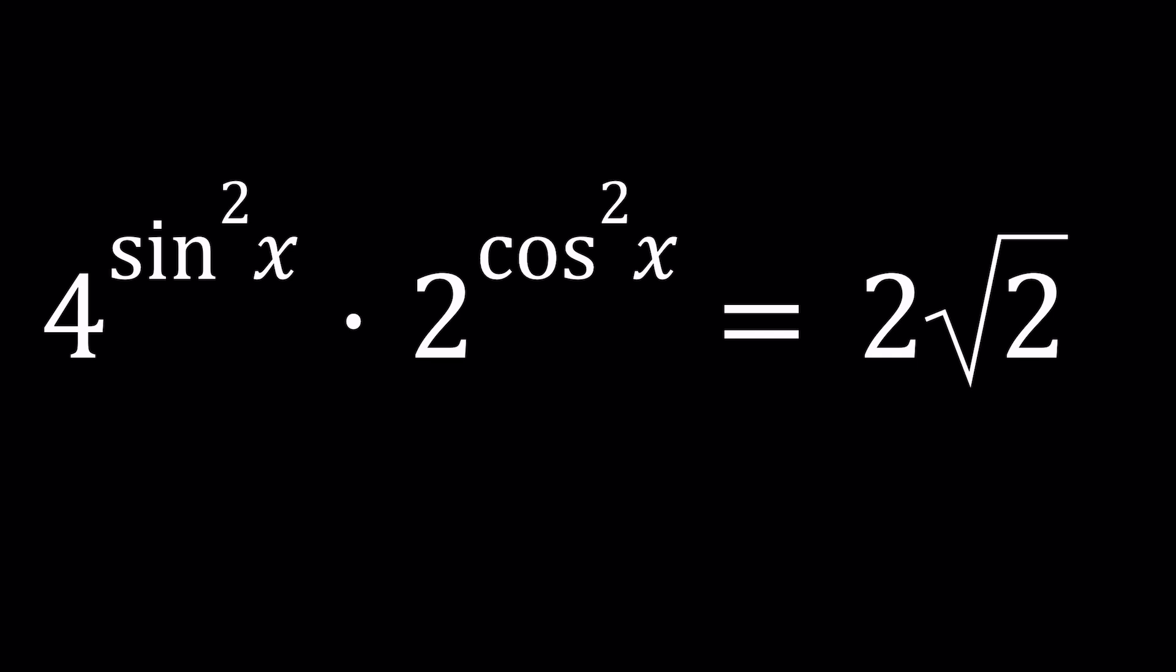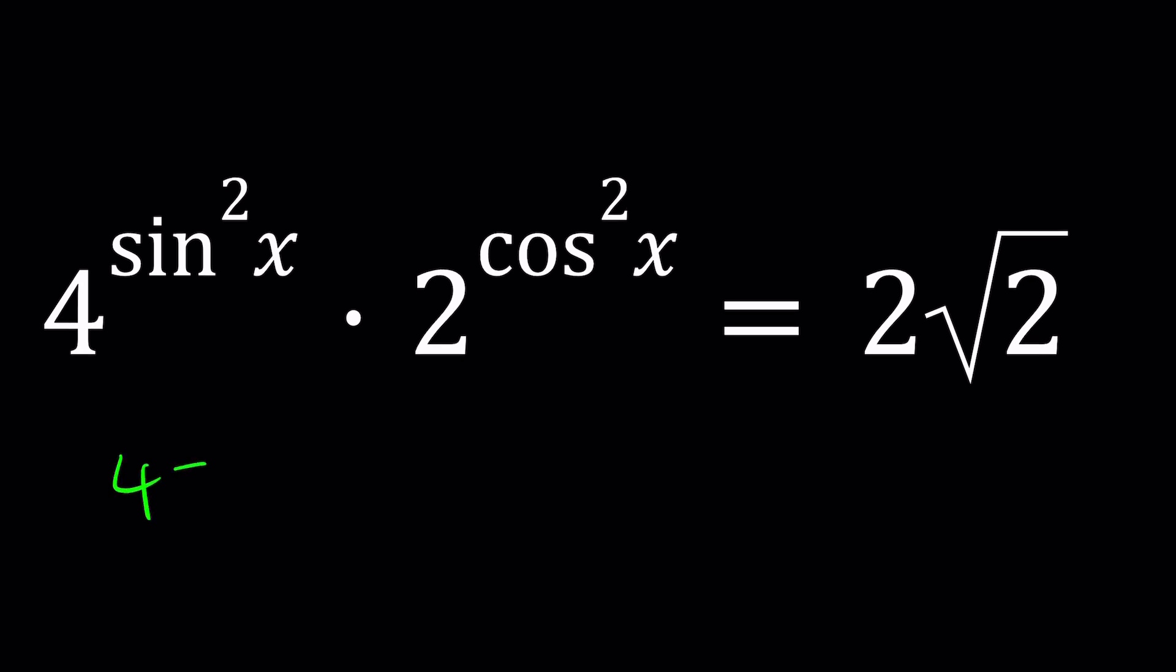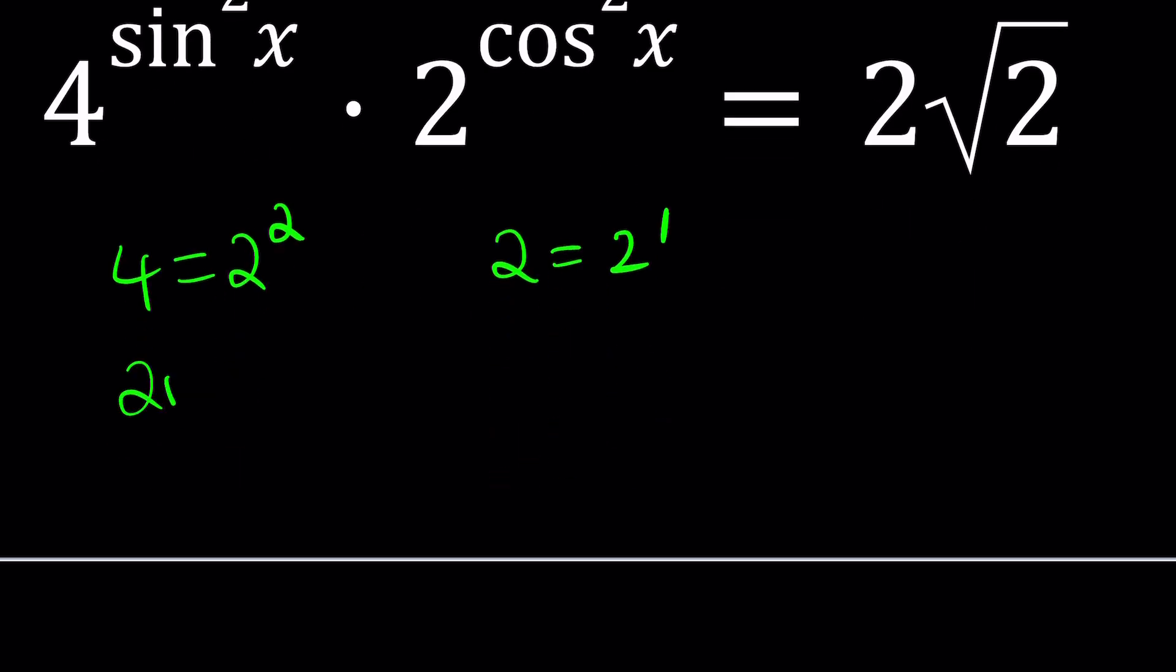So 4, for example, can be written as 2 to the second power, right? Well, 2 is already 2 to the first power. What about 2 root 2? That's a little tricky, isn't it?